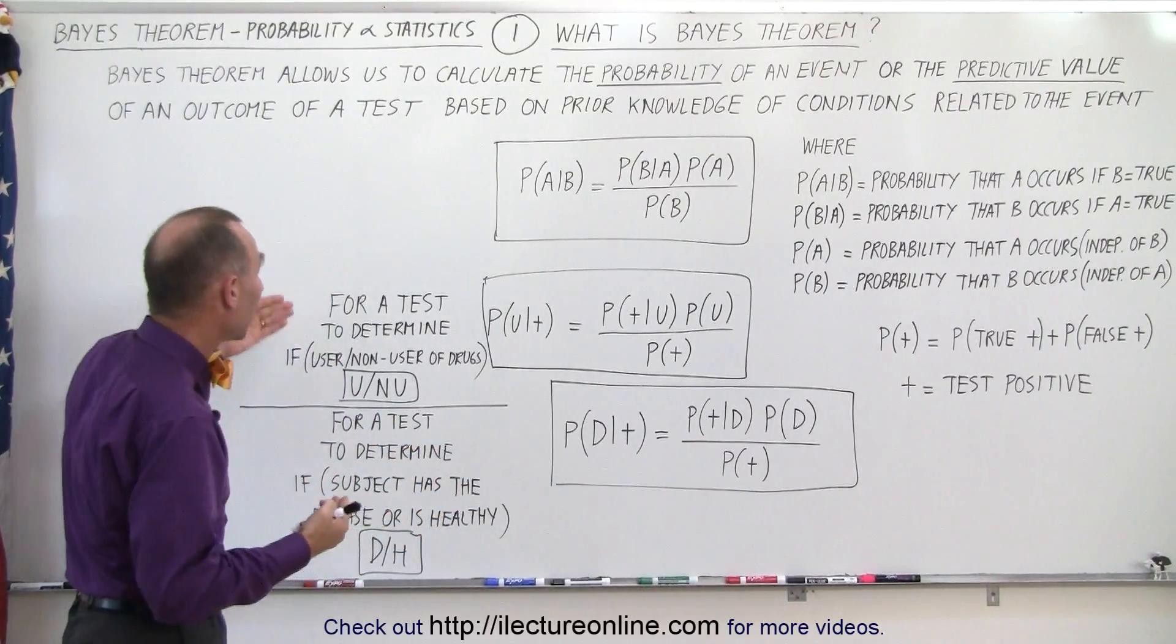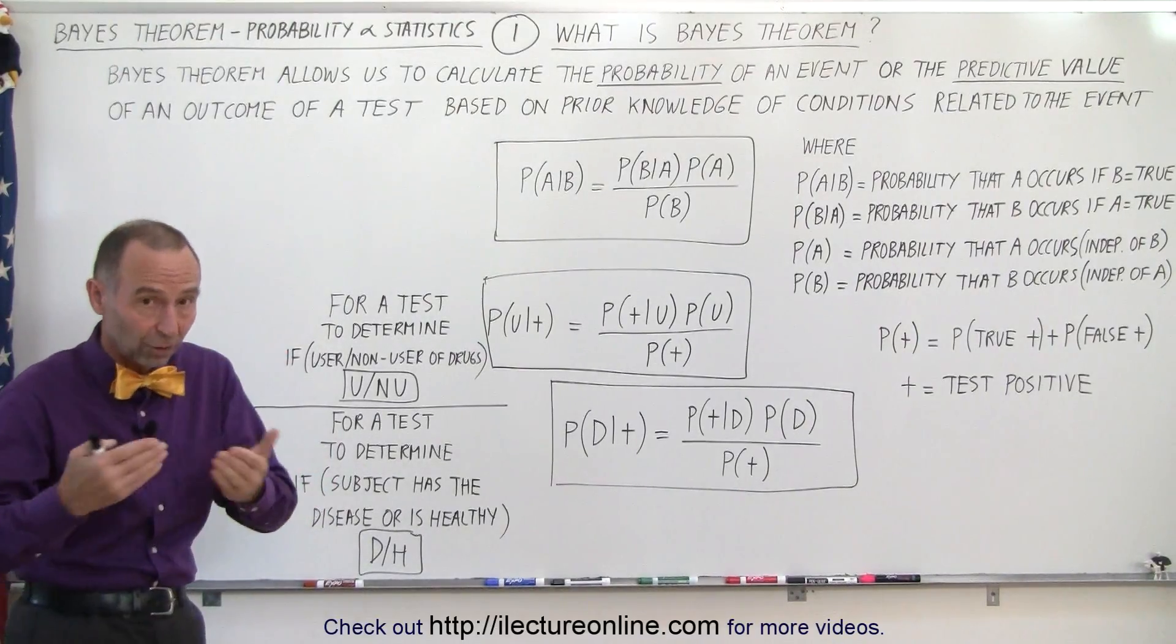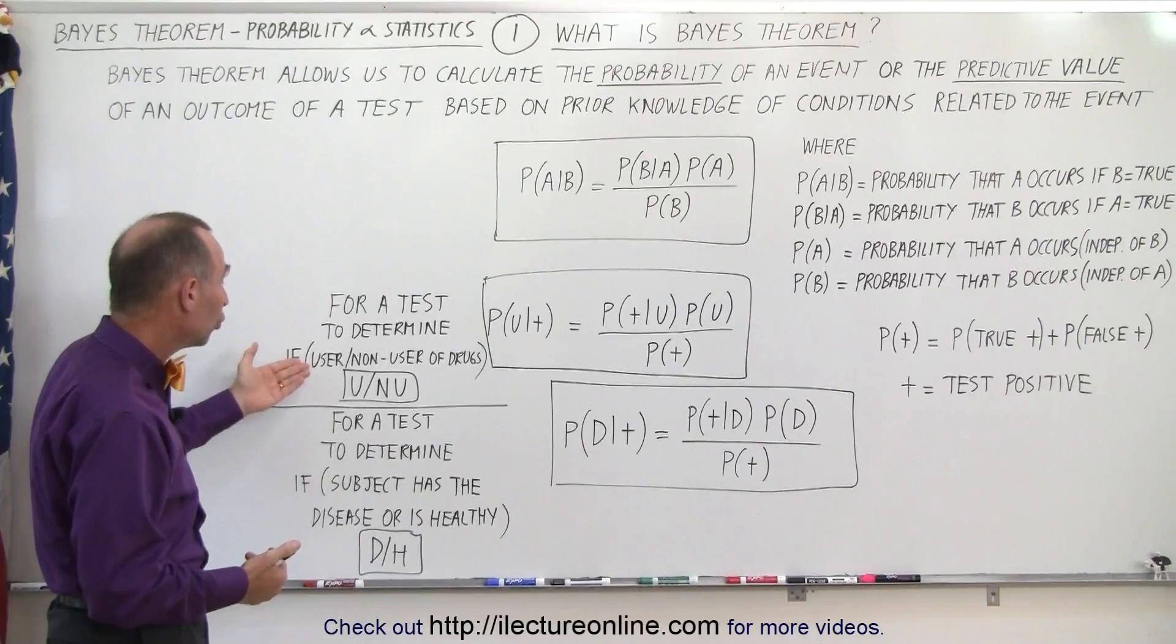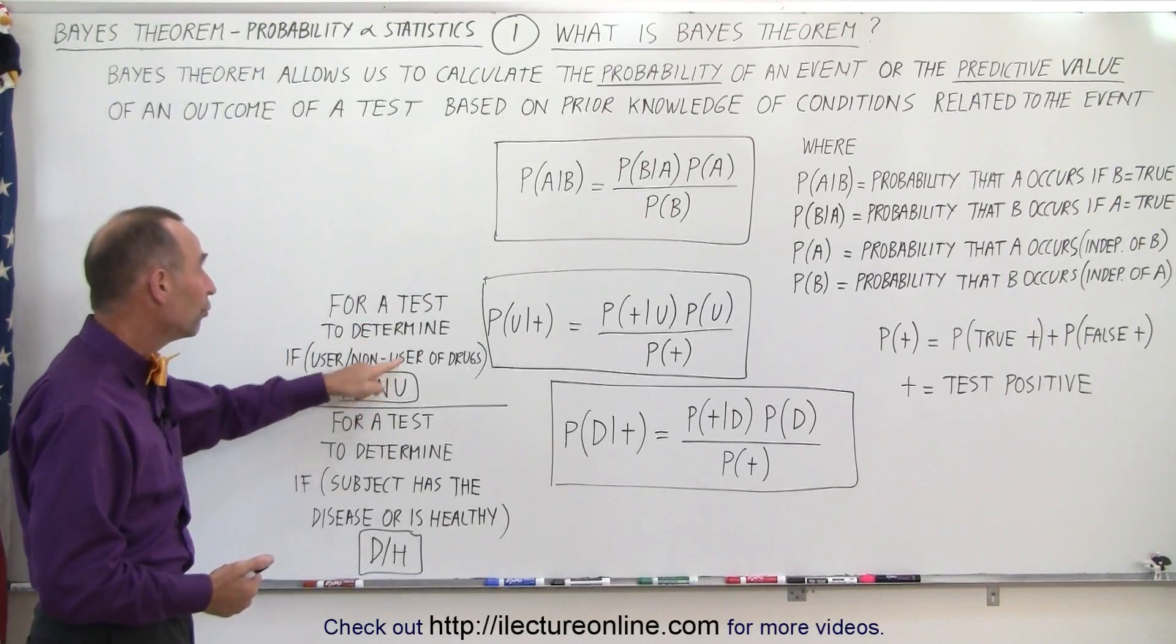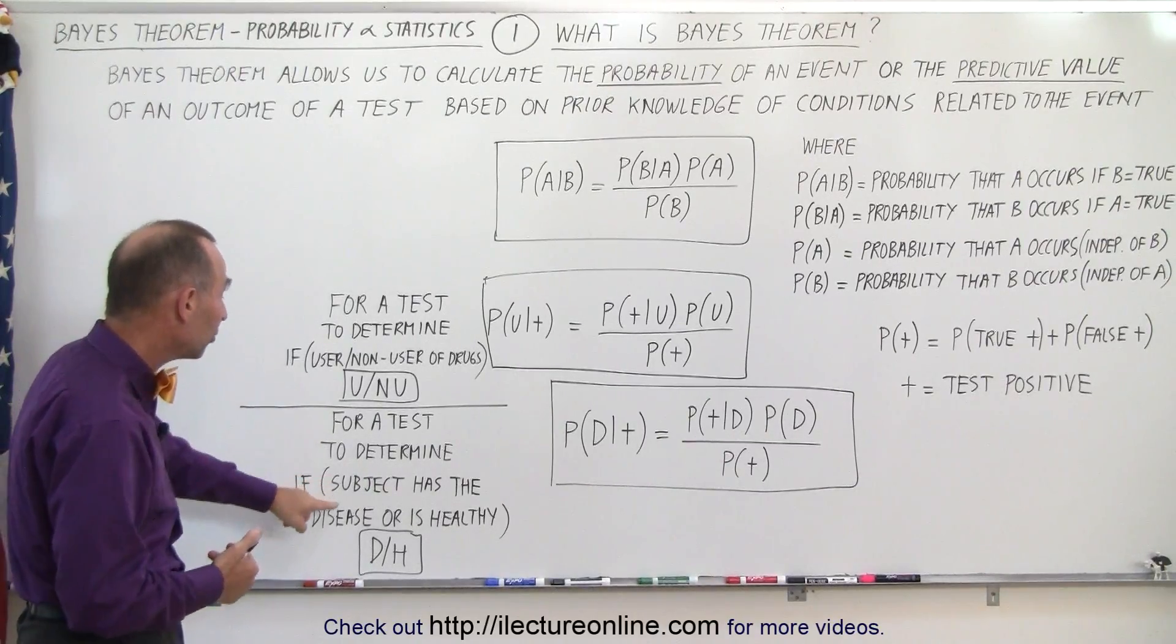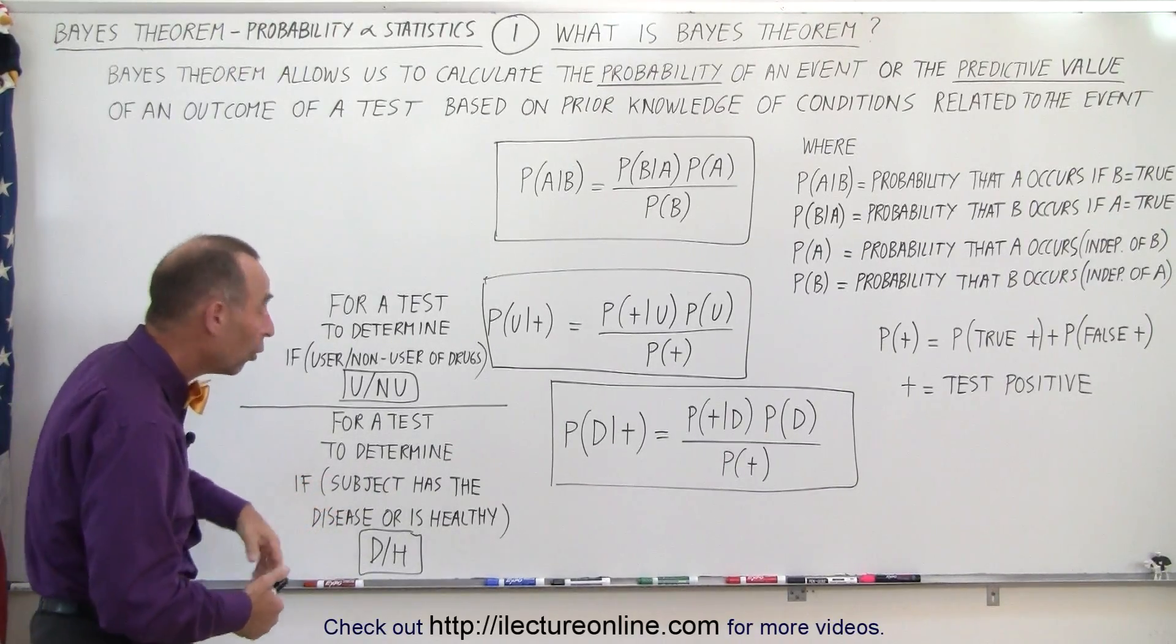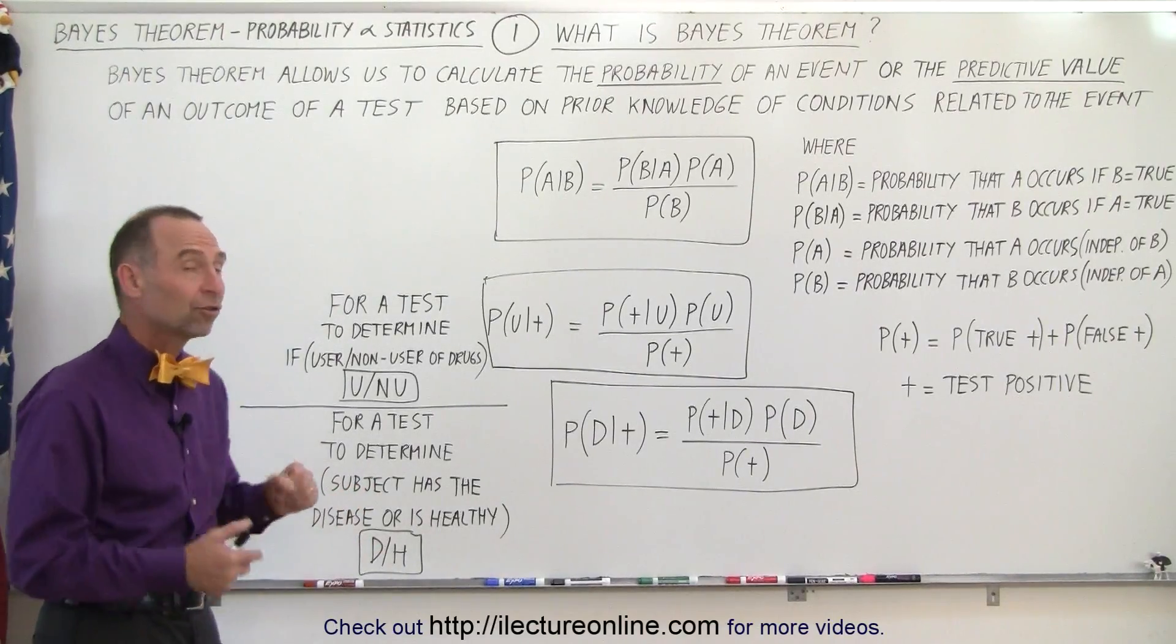For example, let's say that we want to run a test to determine if the person being tested, the subject being tested, is a user or a non-user of drugs. So we use U for user, NU for non-user. Or we can run a test to determine if the subject has a disease or is healthy. So we use D for disease, H for healthy.